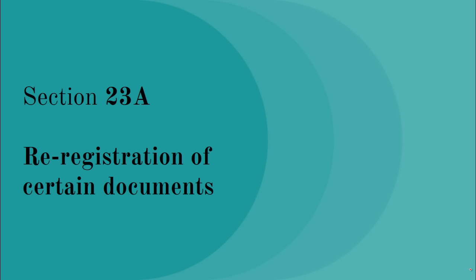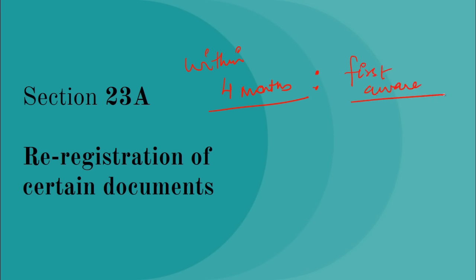Section 23A talks about re-registration of certain documents. If any document has been accepted for registration by a person who was not truly empowered to present it and that document has been registered, any person who claims that document can, within four months of becoming aware of that defect, present to the registrar that the registered document is invalid and give justification. If the registrar is satisfied, they will register the document afresh, treating the old registration as if it never existed.